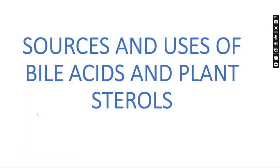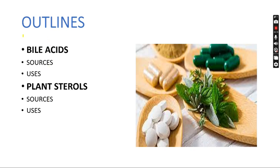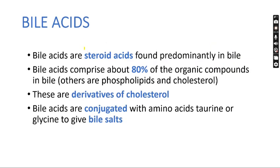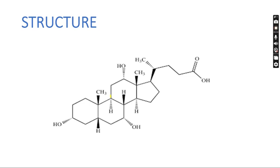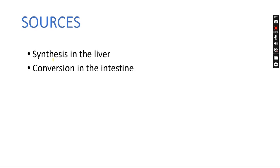Our topic of discussion is sources and uses of bile acids and plant sterols. Bile acids are steroids — specifically steroid acids found predominantly in bile — comprising about 80% of the organic compounds in bile, with others being phospholipids and cholesterol. Bile acids are derivatives of cholesterol and are conjugated with amino acids taurine or glycine to give bile salts. This is the structure of bile acids.